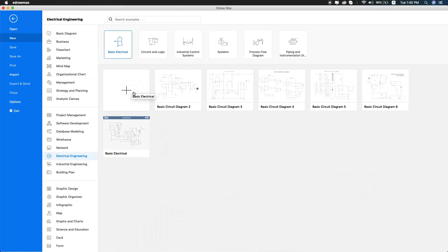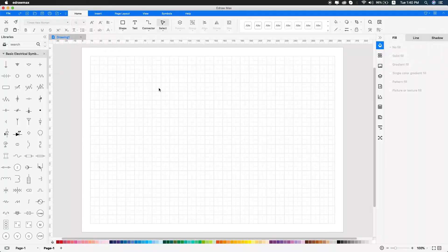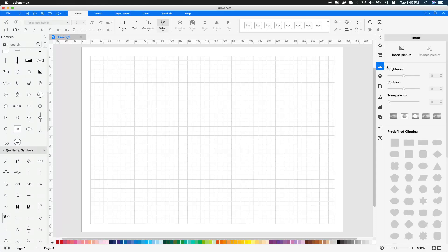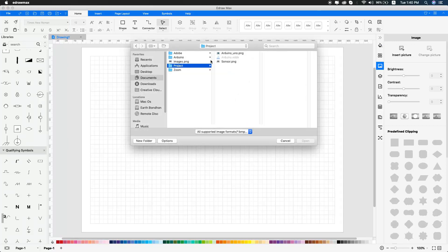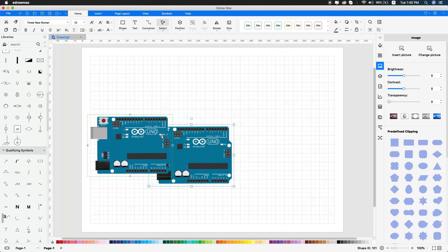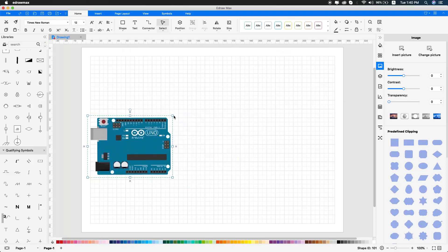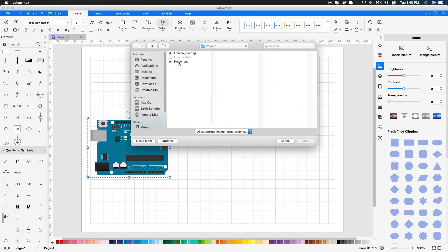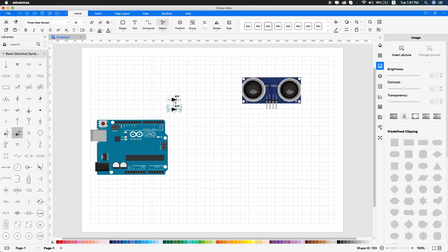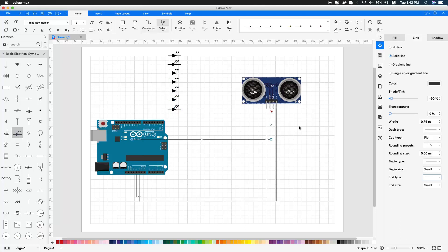Open the basic electrical diagram and the electronics component symbols. First, insert the Arduino board. Then insert the Arduino board and the ultrasonic sensor, which is important.